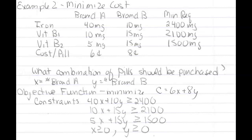Another type of linear programming problem would be dealing with minimizing cost. So example two in section 3.2 is a nutrition problem. A nutritionist advises an individual who's suffering from iron and vitamin B deficiency